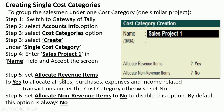Set 'Allocate Revenue Items' to Yes. As mentioned, there are two types — revenue-based and non-revenue-based. Allocate all sales, purchase, expenses, and income-related transactions under cost category by setting it to Yes. Set 'Allocate Non-Revenue Items' to No to disable that option; by default, this option is always No.